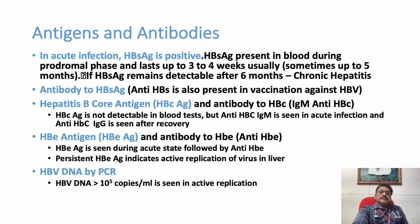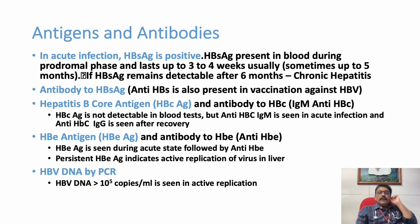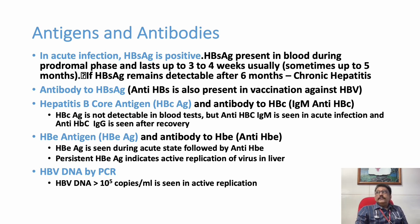In the acute phase, HBS-AG is positive. If it remains positive for more than six months, we suspect chronic hepatitis. Anti-HBS is also present after vaccination, and anti-HBS levels can indicate whether patients require revaccination. HBC antigen is not detectable in blood, but IgM anti-HBC is seen in acute infection, while IgG anti-HBC is seen in chronic infection.